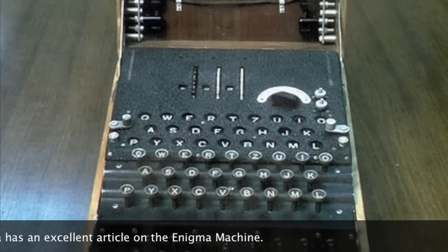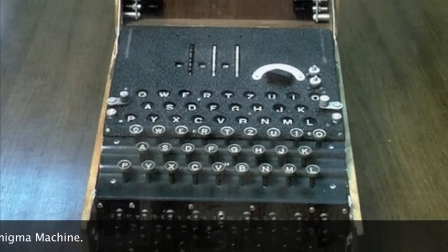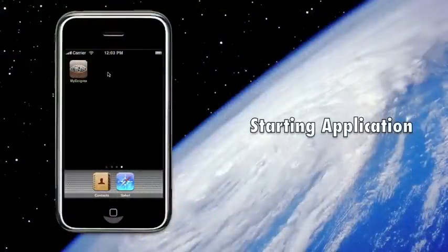The rotors would then shift again, so you would get a different value the next time you press the same character. And so on and on, you would type your character, and that's how you would get your encrypted message.